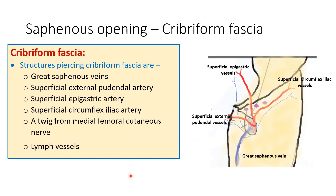Now let us see the structures piercing the cribriform fascia. They are: the great saphenous vein, three arteries — the superficial external pudendal, superficial epigastric, and superficial circumflex iliac arteries — a twig from the medial femoral cutaneous nerve, and lymph vessels. In this picture, you can see the great saphenous vein, the superficial external pudendal artery, the superficial epigastric artery, and the superficial circumflex iliac artery piercing the cribriform fascia.